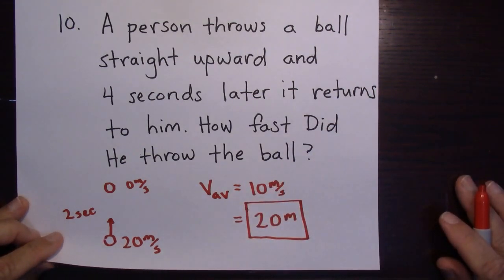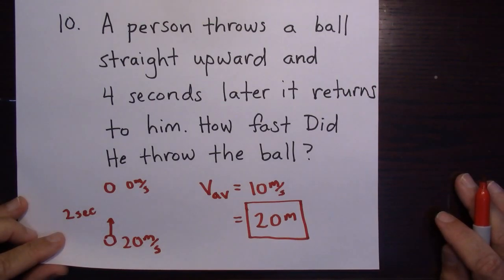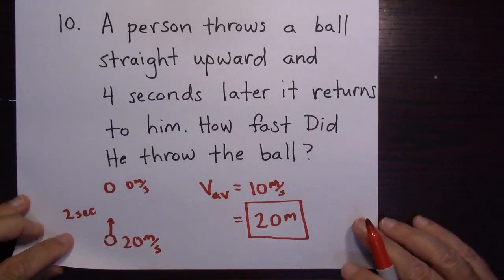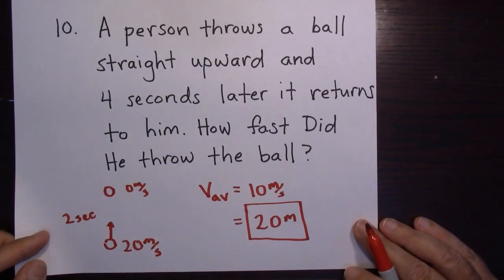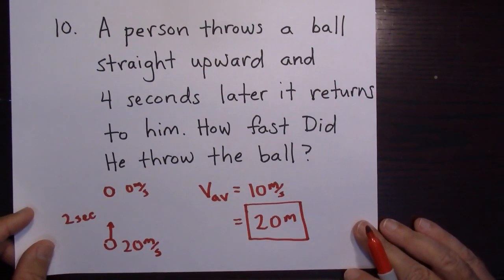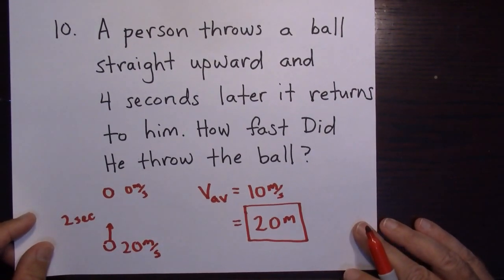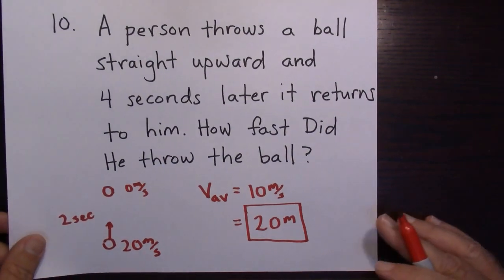That's how you do that. It's just a nice way to quickly check problems. Even if the numbers don't work out perfectly, you can round them — including rounding 9.8 to 10 — and quickly verify whether your answer is reasonable.